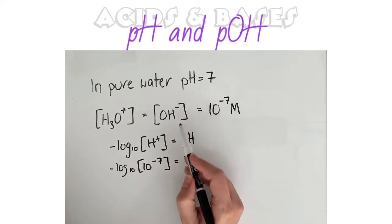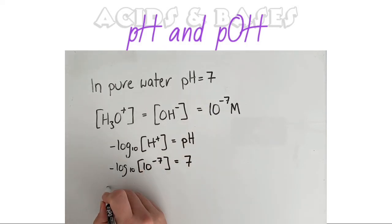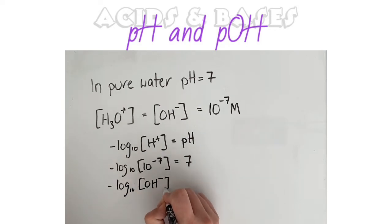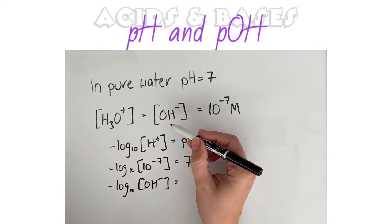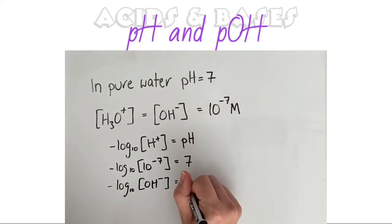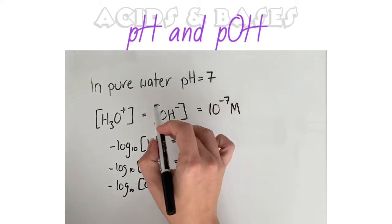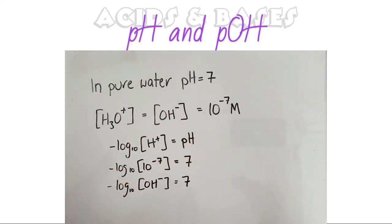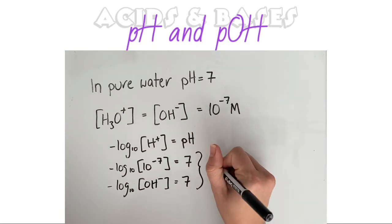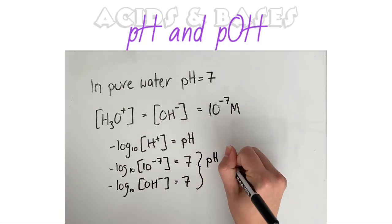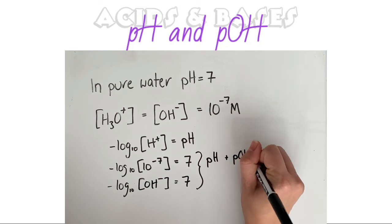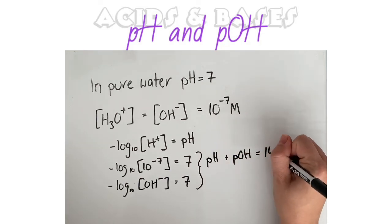Now if we do the same thing for the concentration of the hydroxide ions, we get the same value because we're subbing in the same concentration because the concentrations are the same. Now this also makes sense because we know that the pH plus the pOH is going to equal 14.